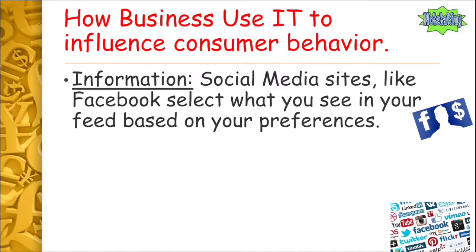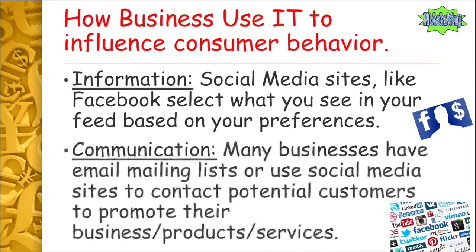Social media sites like Facebook and Instagram select what you see in your feed based on your preferences. If you like a certain page or post, Facebook and Instagram add this to your personal profile on their side and serve you very specific ads. For example, if you like a post about football, you might start getting ads about football match tickets or football merchandise — the ad is personalized towards you and what you like.